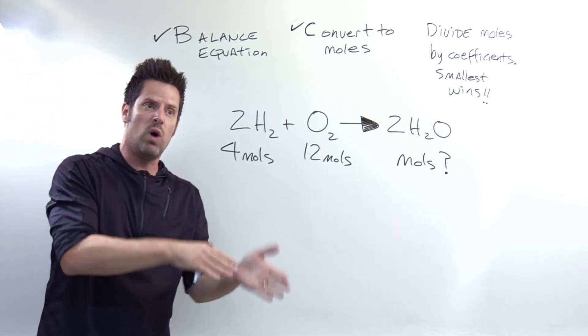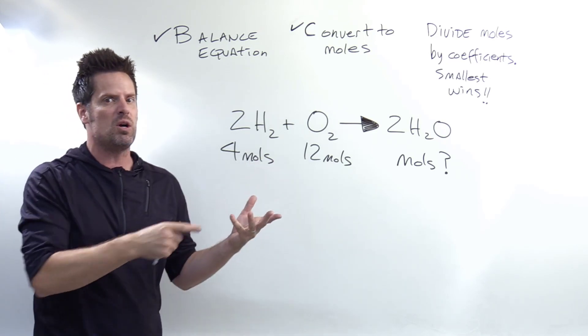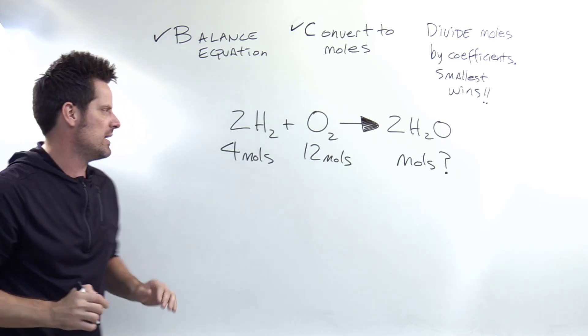Smallest one wins, meaning that the smallest answer that you get when you do that process is the thing that runs out first, hence the limiting reactant.